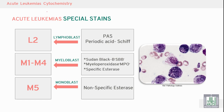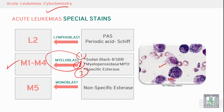In myeloid leukemia with granules and Auer rods — M1 and M4 — we have myeloid blasts and promyelocytes with granules and Auer rods. Sudan black, myeloperoxidase, and specific esterase can stain these granules and Auer rods.